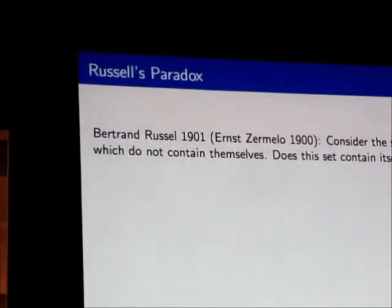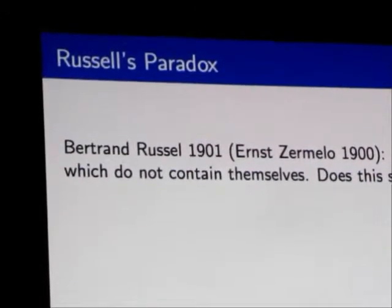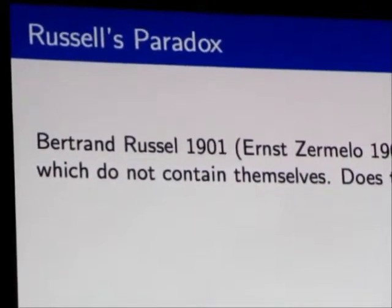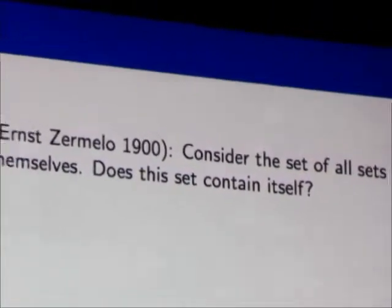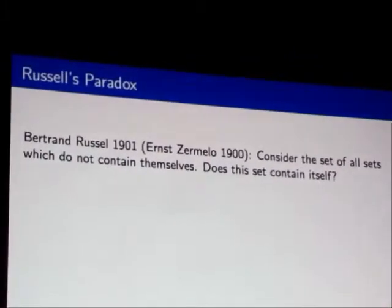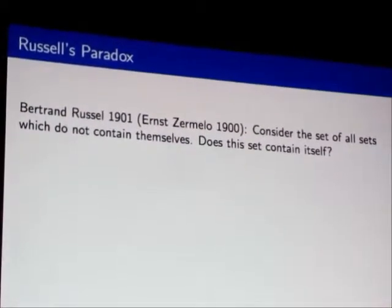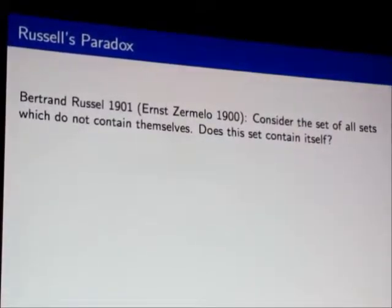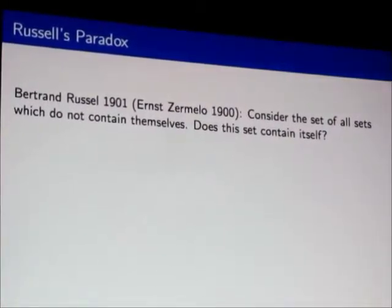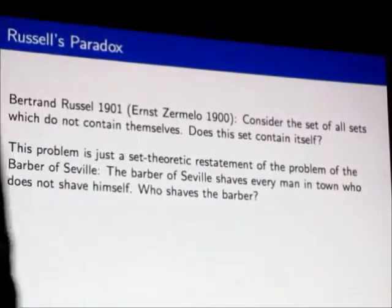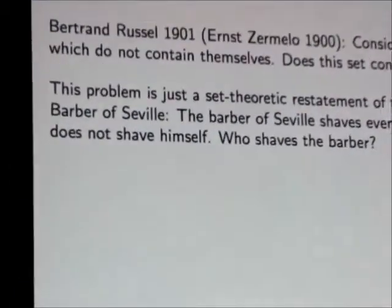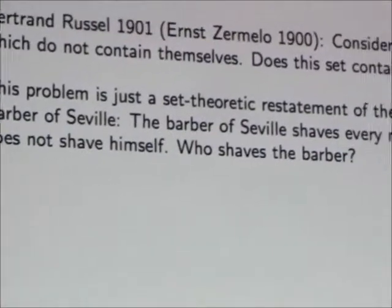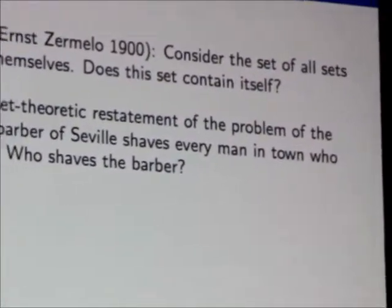A few years later, in 1901, Bertrand Russell came up with this very famous paradox in mathematics, although it was actually known to Ernst Zermelo, who is the Z in ZFC. He came up with this paradox, which comes from this very innocent question. Consider the set of all sets which don't contain themselves. Does this set contain itself? This is the barber of Seville. If you assume that it does, you get a contradiction. If you assume that it doesn't, you also get a contradiction.